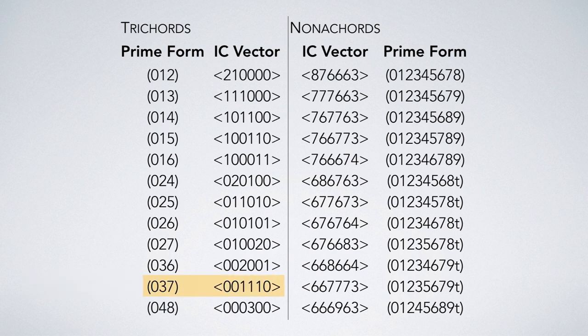This was a simple example. The more notes in a set class, the more intervallic relationships there will be. And this is why you can see all the placeholders filled with higher digits in the interval class vectors for nonachords.